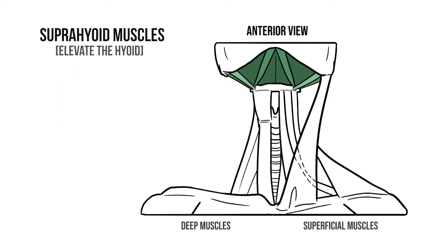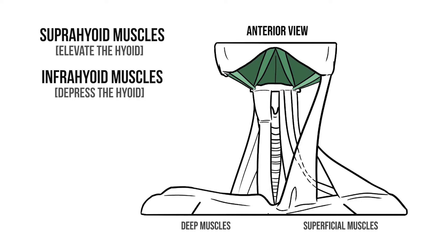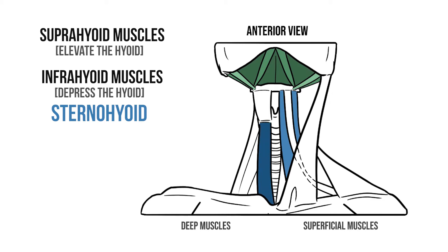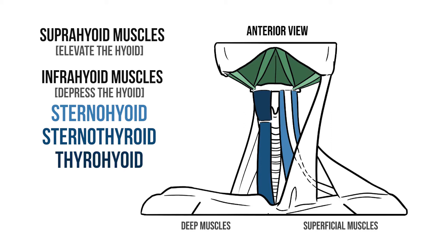Below the hyoid are several long thin muscles that help to pull the bone down. These are the infrahyoid muscles, sometimes known as the strap muscles because of their shape. All of these muscles are named after their two attachments. For example, one passes from the sternum to the hyoid — sternohyoid. Deep to this, the muscle from the sternum to the thyroid cartilage is sternothyroid. The small muscle between the thyroid cartilage and the hyoid bone is thyrohyoid. The final muscle runs from the scapula to the hyoid; we use the prefix omo, making this muscle omohyoid.